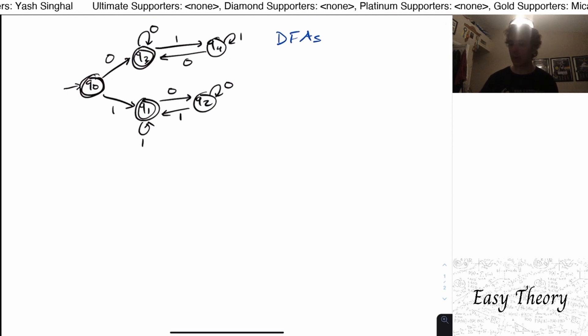And when we read a string, we read the string one character at a time and record where we actually go in the machine. And once we're done reading the string, if we are in one of the double circle states, we say accept on that string. And if we're not, we say we don't accept that string.